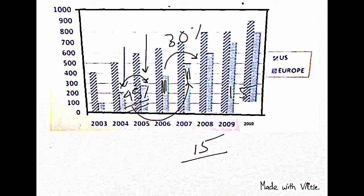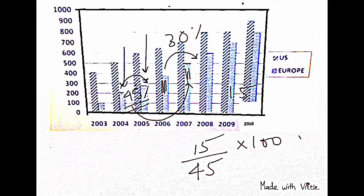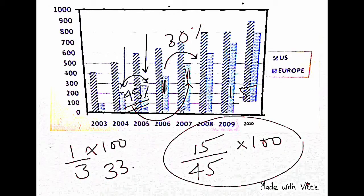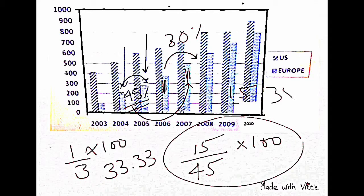So we will write it here: 15, then base 45, into 100. This will be your percentage change in percentage change, which is asked in this question. So 1 by 3 into 100, that is like 33.33. So you can mark your answer close to anything that is 33.33, so the answer you will mark is 35%.